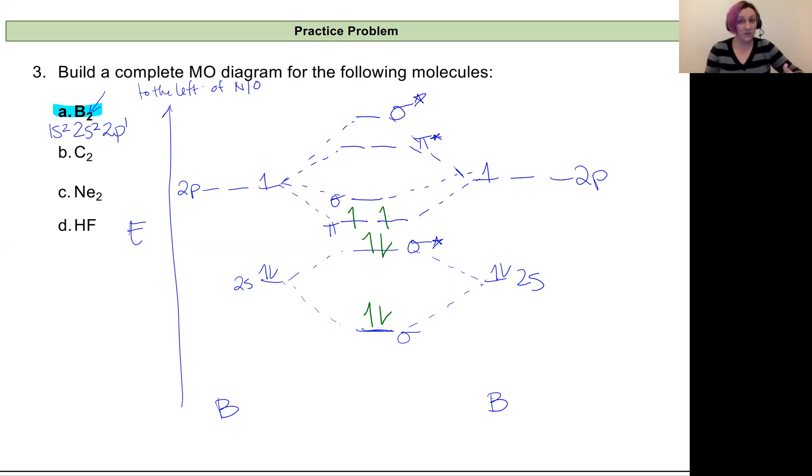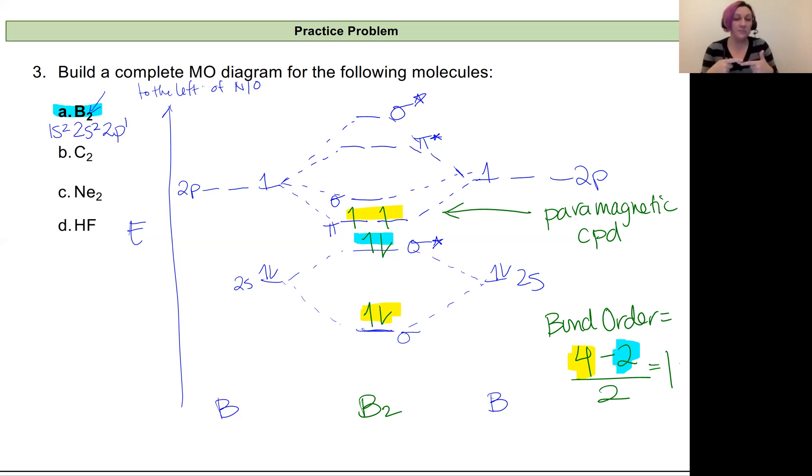Now I can extract quite a bit of information from this. So I have unpaired electrons. Therefore, I have a paramagnetic compound. My bond order for B2, bond order is going to be equal to my bonding minus my antibonding. So I've got one, two, three, and four bonding. And I have just two antibonding. So let's color code these. And I always divide that by two. So that's going to give me a bond order equal to one. So this will form one single bond essentially between these two boron atoms.